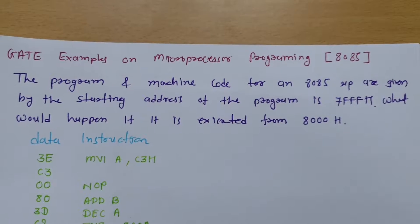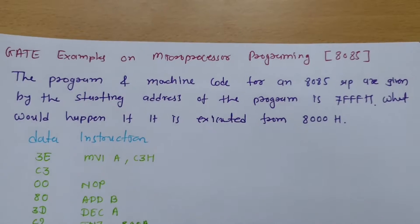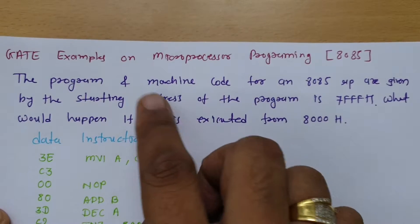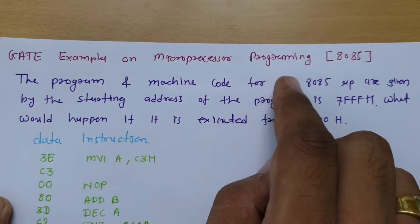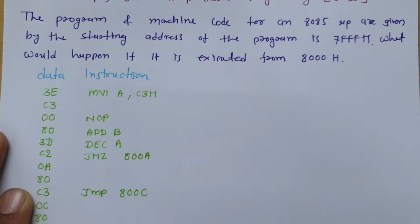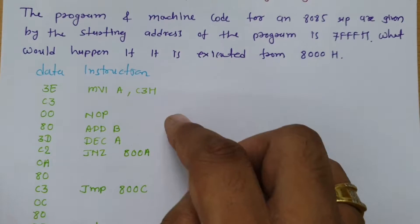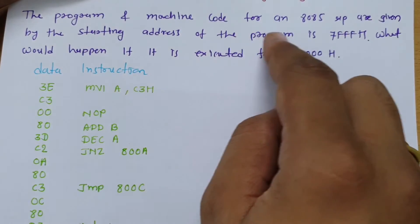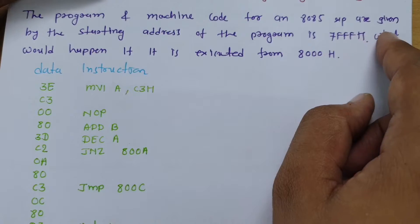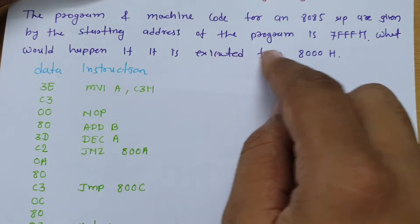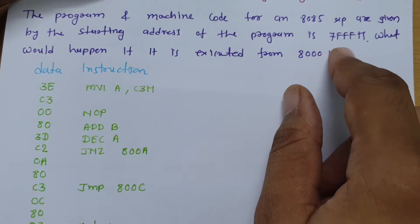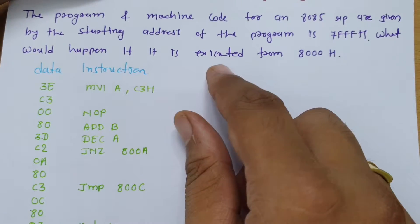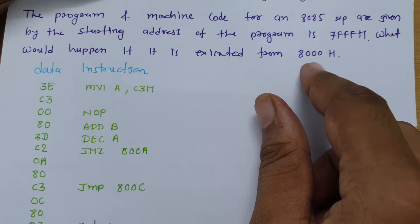Welcome to the microprocessor and interfacing playlist. Here in this session, I will be explaining GATE examples on microprocessor programming. The first question: given a program and machine code for the 8085 microprocessor with a starting address of 7FFFH, what would happen if it is executed from 8000H?